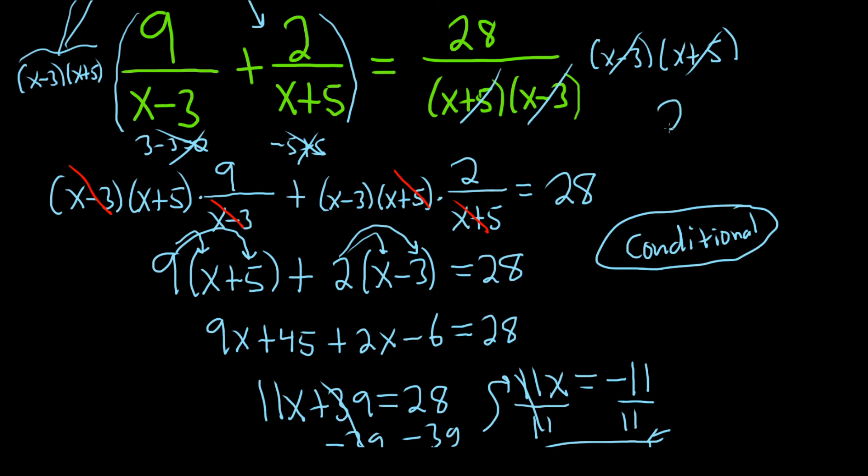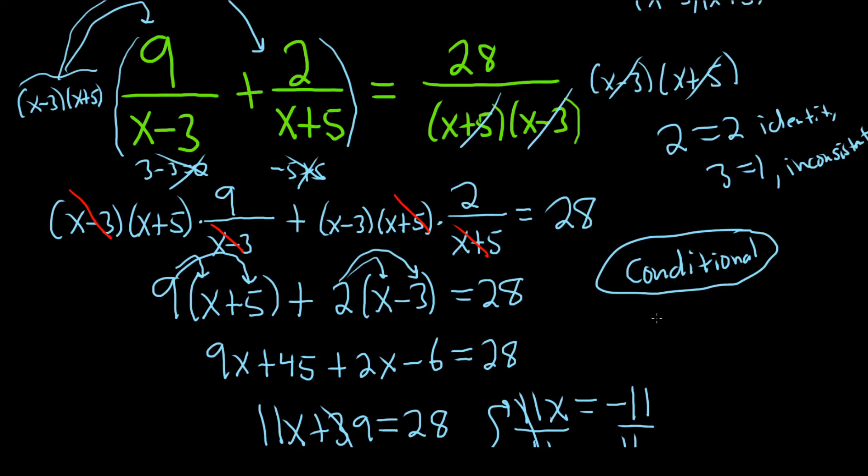If you have infinitely many solutions, like if it's always true, like if you get something like this, then it's called an identity. And if you get something silly that has no solution, like 3 equals 1, that's called an inconsistent equation. I hope this video has been helpful. That's it.